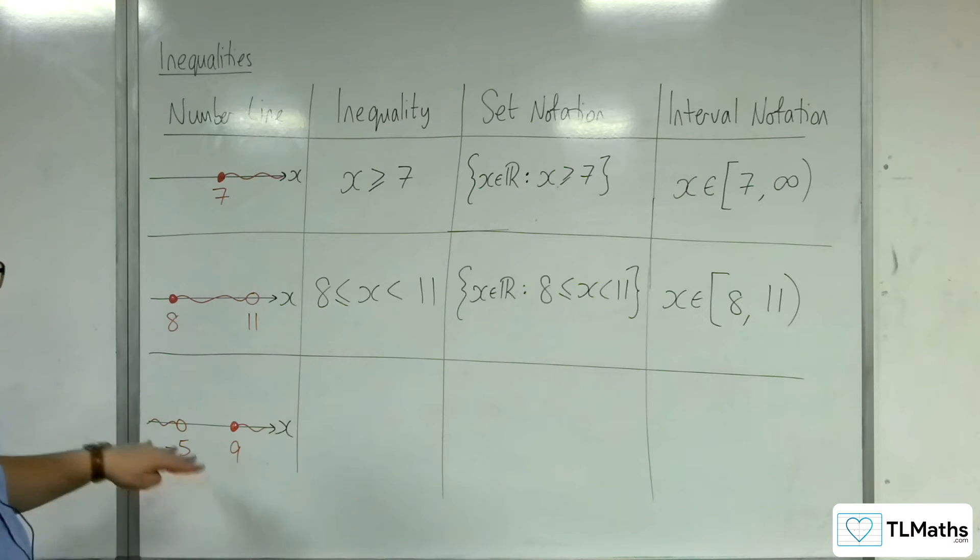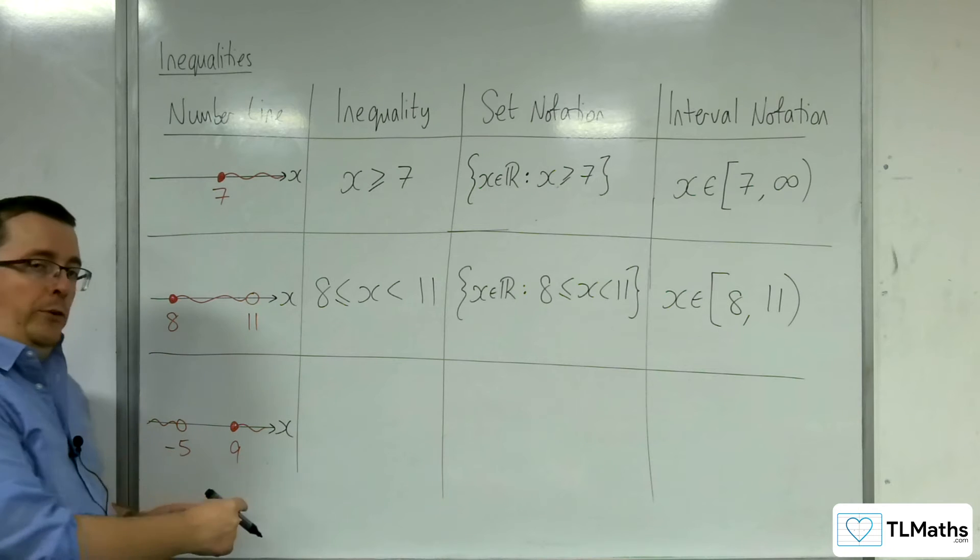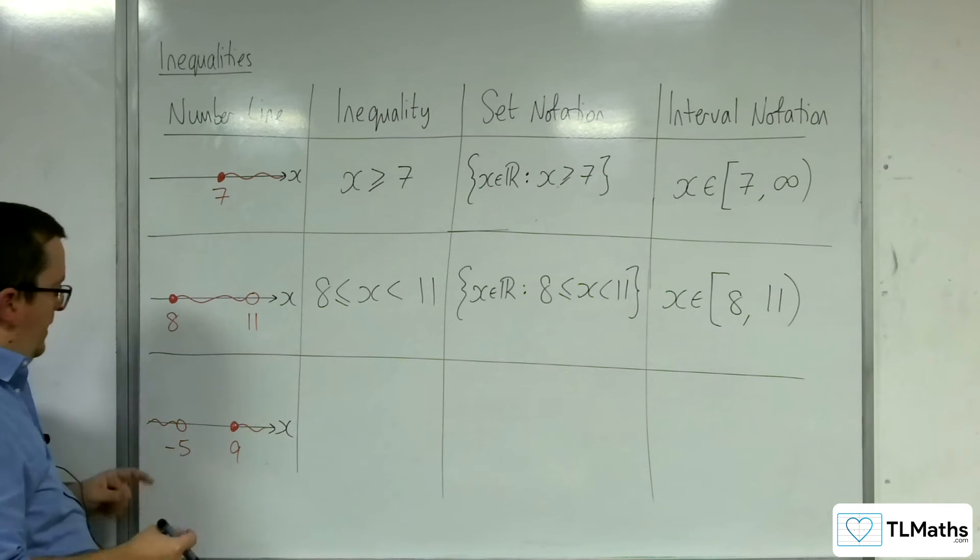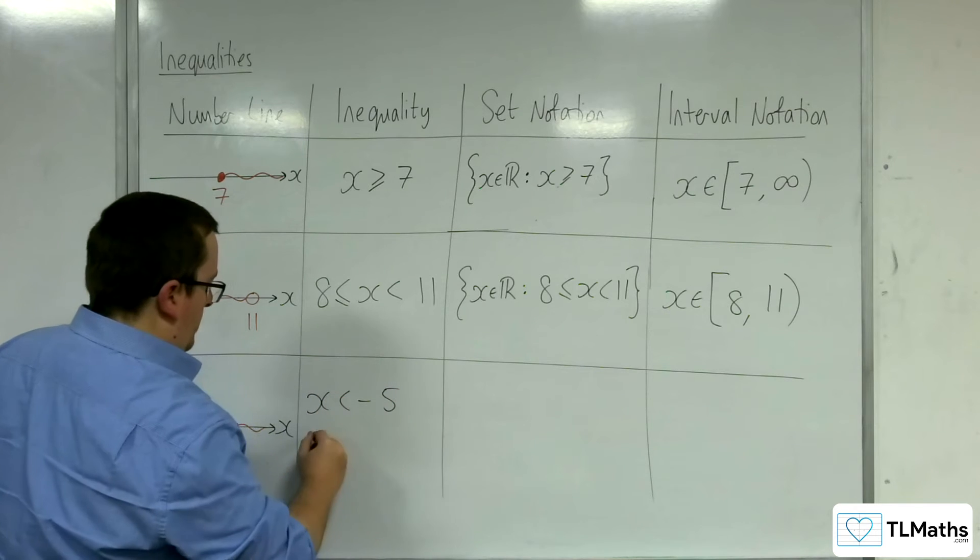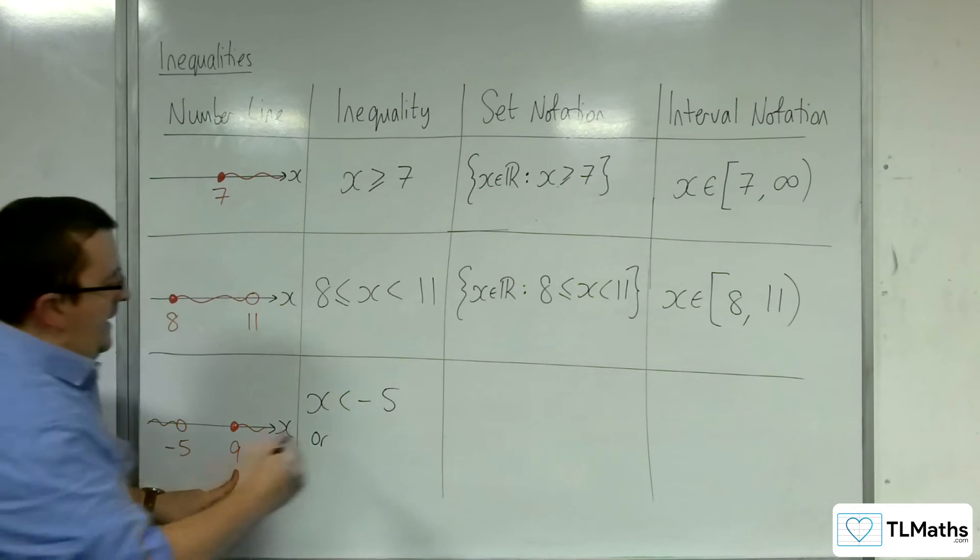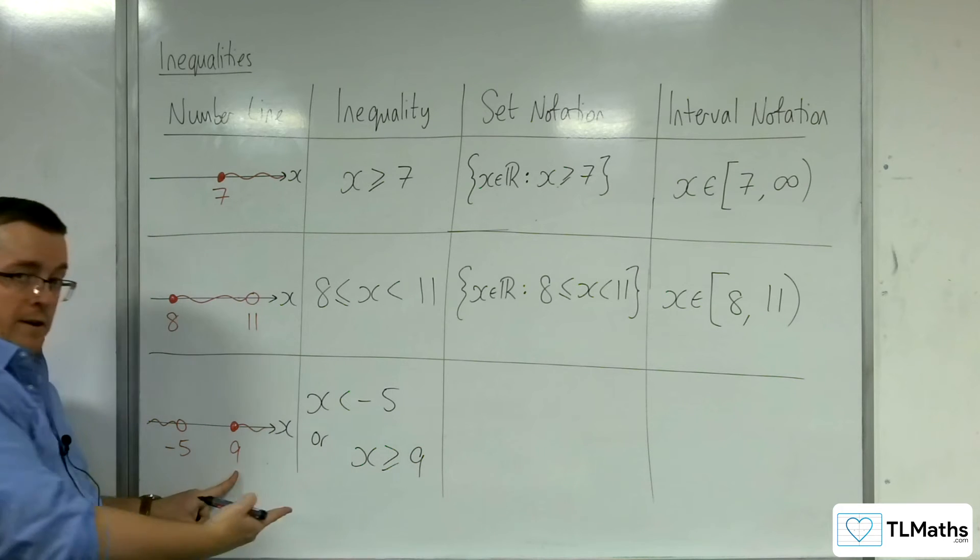And then finally, for the third one, we've got two regions, so we need two distinct inequalities here. So x is less than minus 5, or x is greater than or equal to 9.